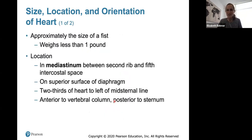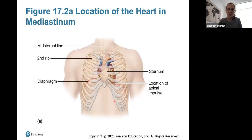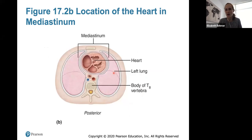Your heart is about the size of your fist, weighs less than a pound, and is in the mediastinum — the area between the pleural cavities, between the lungs. It lies on the superior surface of the diaphragm, a little to the left of your sternum, anterior to your vertebral column but posterior to your sternum or breastbone. This cross-section shows how the heart lies between the lungs and in front of the vertebrae.